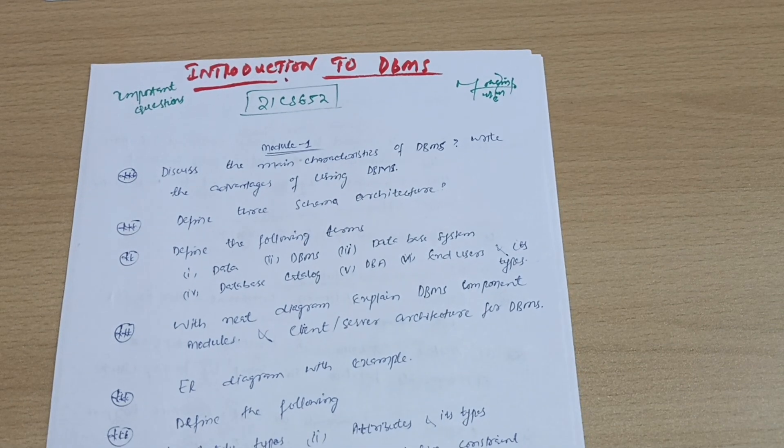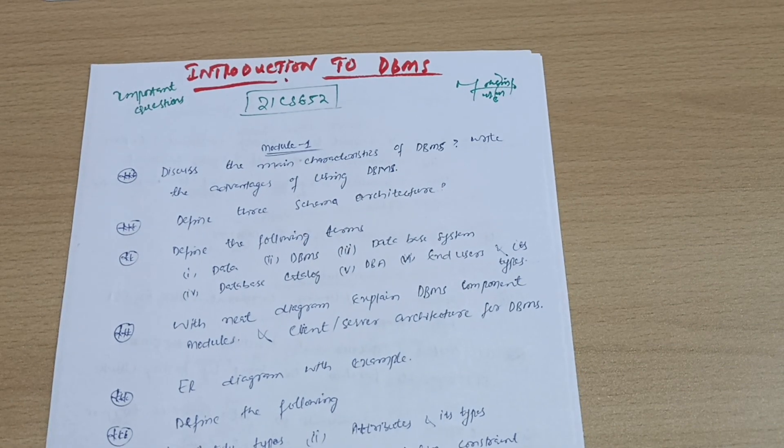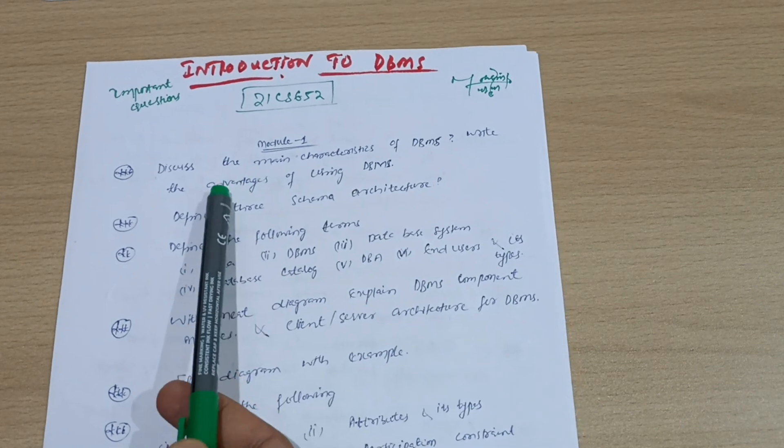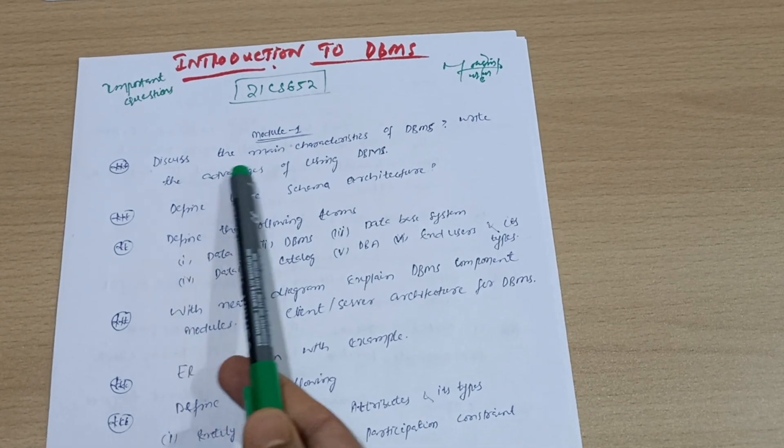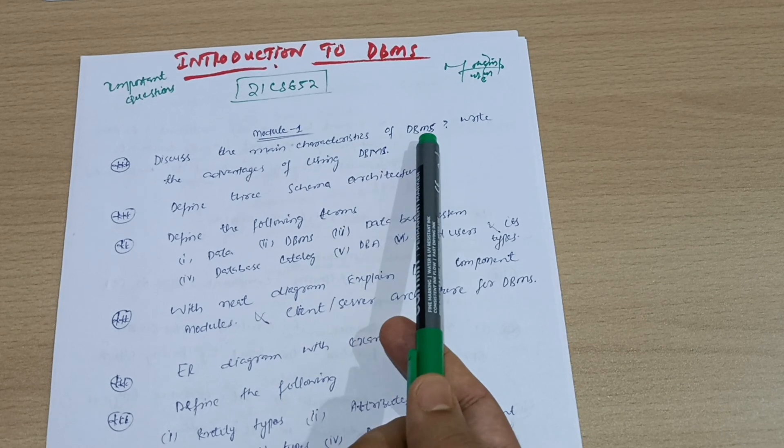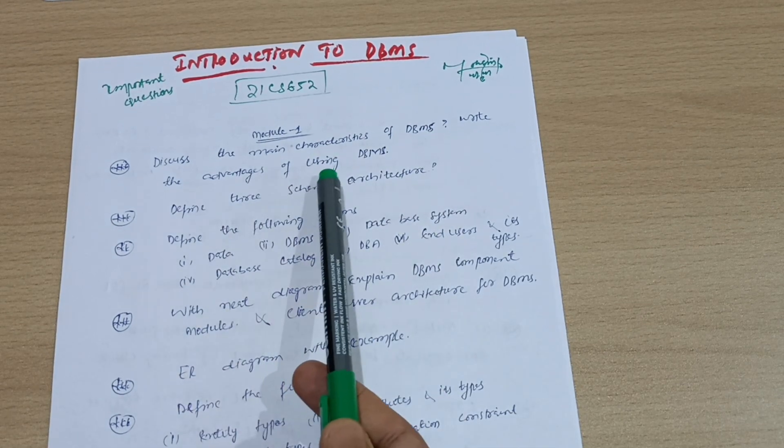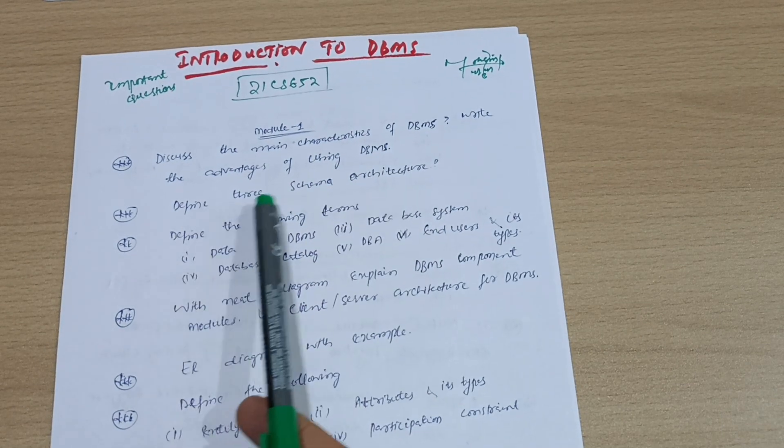So without wasting any time, let me start discussing module-wise important questions. From Module 1, we have six questions: Discuss the main characteristics of database management systems, write the advantages of using DBMS, define three schema architecture.